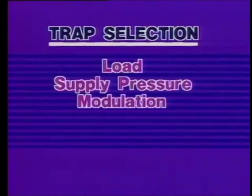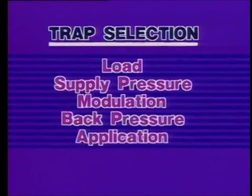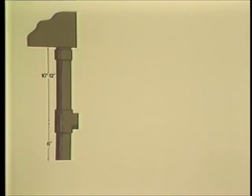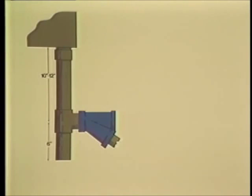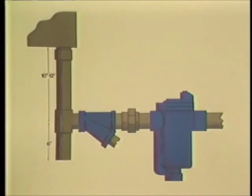Proper selection of trap type and size is based on the condensate load, steam supply pressure, pressure modulation, return line back pressure, and specific application requirements. Do not select traps on the basis of the equipment's condensate outlet size. Regardless of the type of trap selected, install a drip leg, a tee, and a 6-inch dirt leg from the condensate outlet of the process or heat exchange equipment. The drip and dirt legs should be the same size as the equipment's condensate outlet. From the side of the tee, install a strainer to protect the trap from dirt. When using mechanical traps, the drip leg should be 10 to 12 inches long. When the trap's valve is closed, the only force that moves the condensate to the trap is gravity and a slight differential pressure created by collapsing steam, so the trap should be located as close to the equipment as is practical.